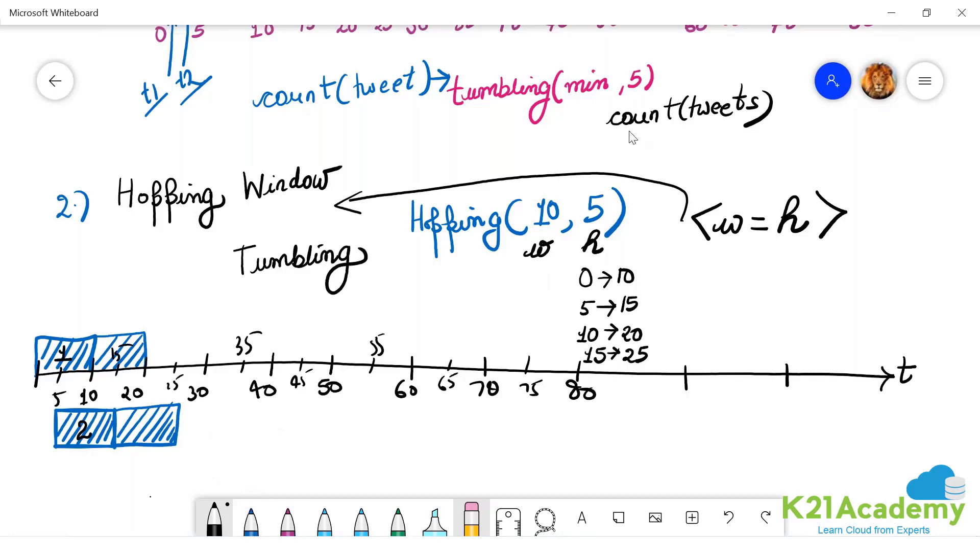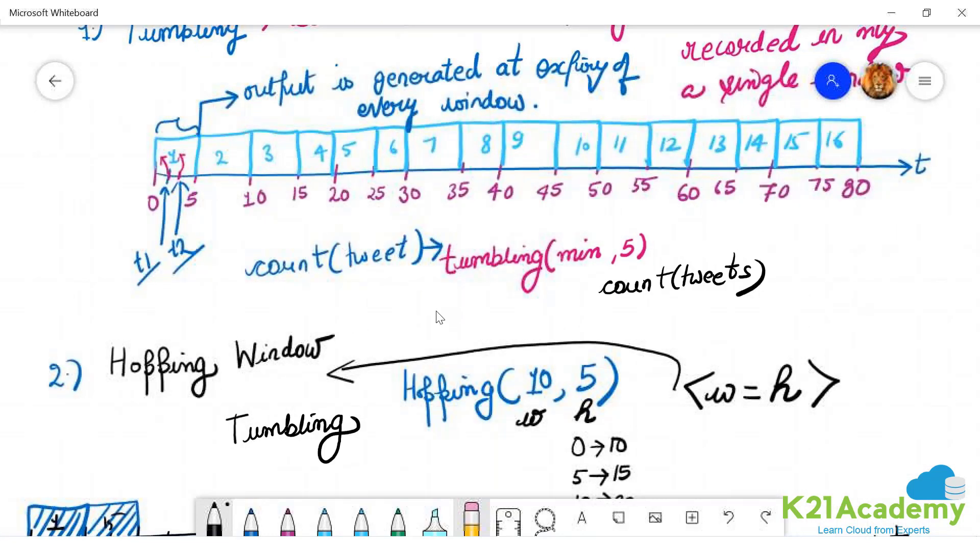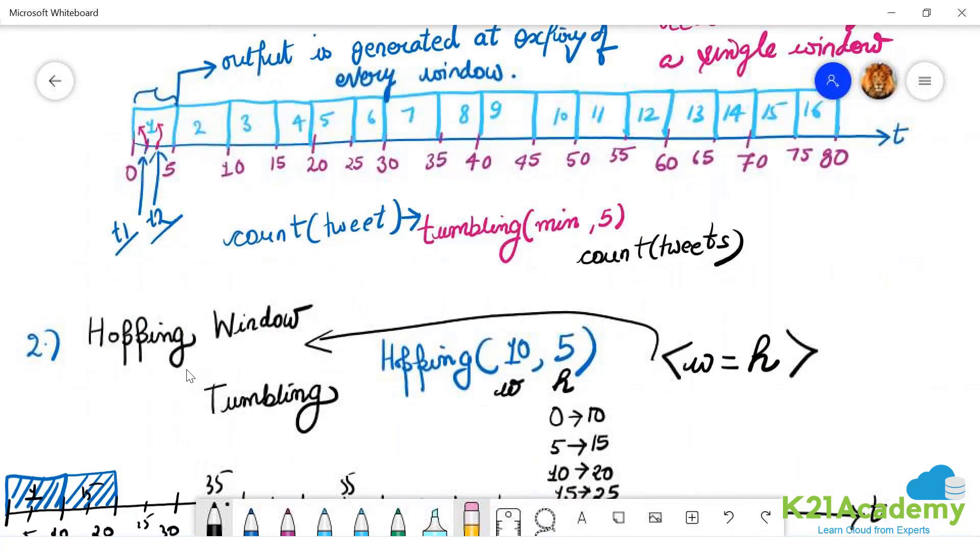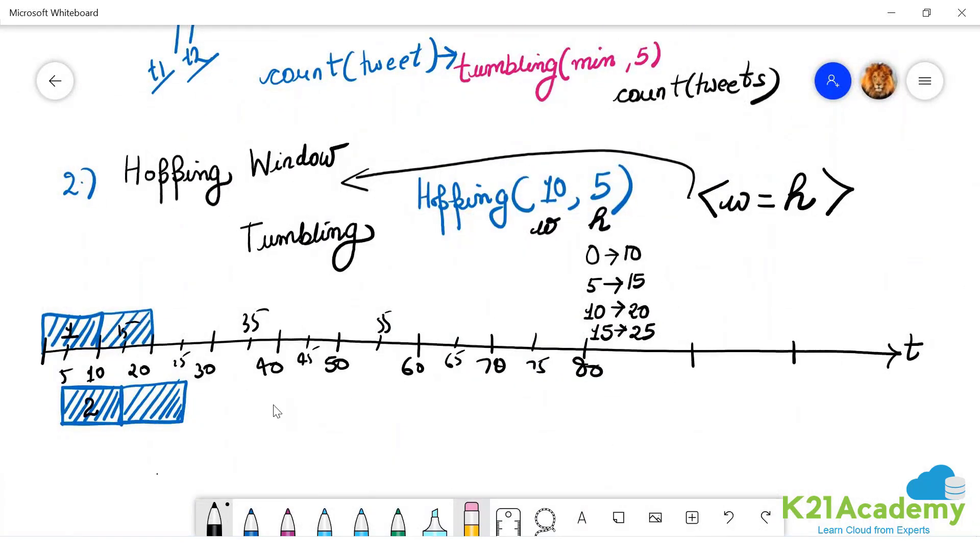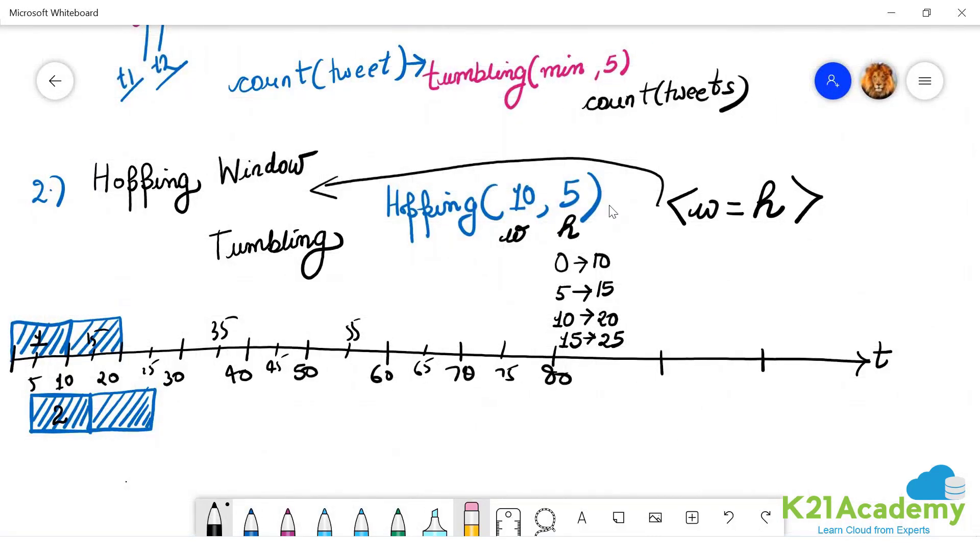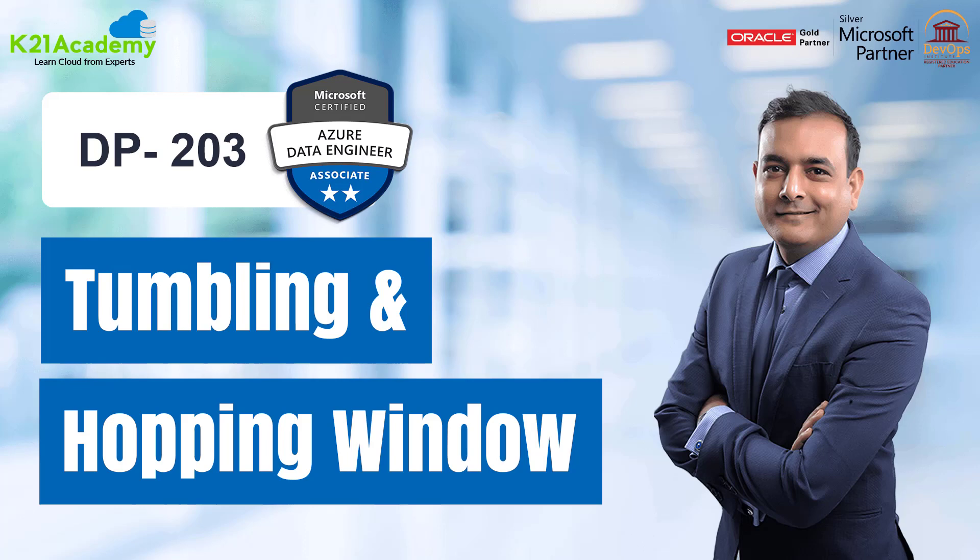All the properties of hopping window are same as tumbling window except it is overlapping and events are recorded in multiple windows in the hopping window. So this is the hopping window. If the hop size is equal to the window size, then it becomes basically the tumbling window.